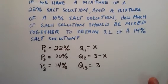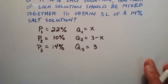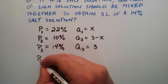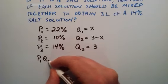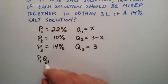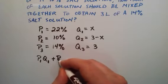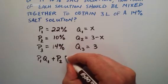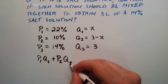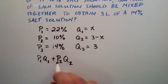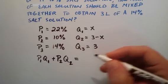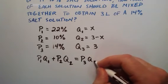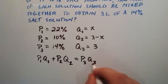Now we're going to set this up into an equation that we can solve. We're going to say that the percentage of solution one multiplied by the quantity we're using of solution one, plus the percentage of salt in solution two multiplied by the quantity of solution two used, equals the final percentage of salt multiplied by the final quantity of solution in the end. P is percentage of salt, Q is quantity of solution used.